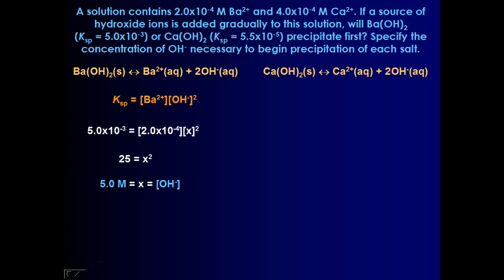For calcium hydroxide, the equation is going to look very similar because barium and calcium are in the same group, so they form the same type of precipitate. The Ksp expression is going to look just about the same, other than Ca instead of Ba. Our Ksp value is slightly different, 5.5 times 10 to the negative 5th, and our concentration of calcium was a little bit larger, 4 times 10 to the negative 4th.